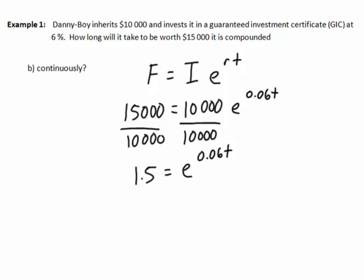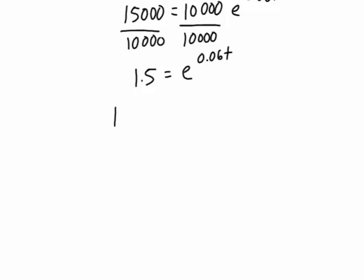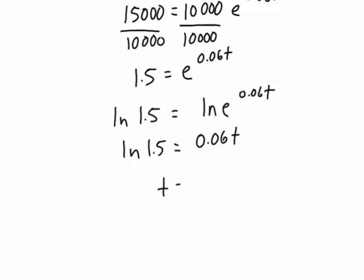Now we're trying to get something out of base e. This is where we want to ln both sides. ln of 1.5 is the same as ln of e to the 0.06t. Remember, ln e just cancels each other out, and we're left with 0.06t is the same as ln of 1.5. A little bit easier of a calculation, because t then is just ln 1.5 divided by 0.06.